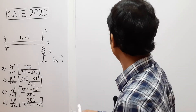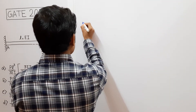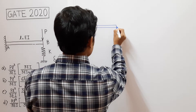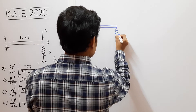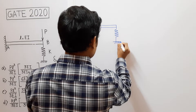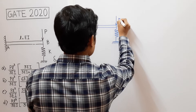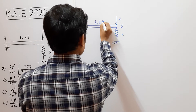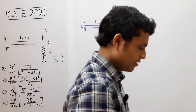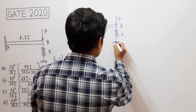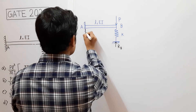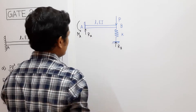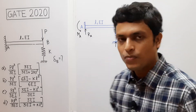Let us draw the system again for understanding. There will be one reaction force R_B at B, one reaction force R_A at point A, and at point A one reaction moment M. So there are three unknowns: R_A, M_A, and R_B.